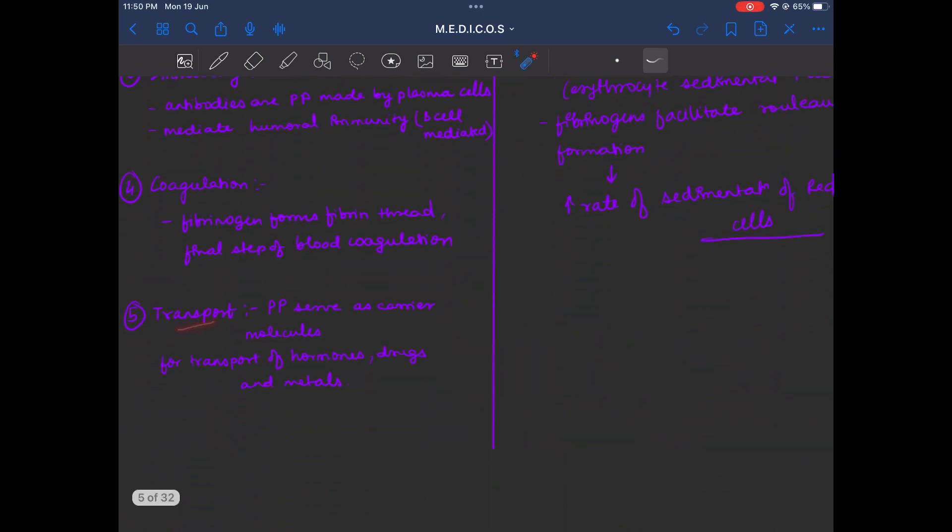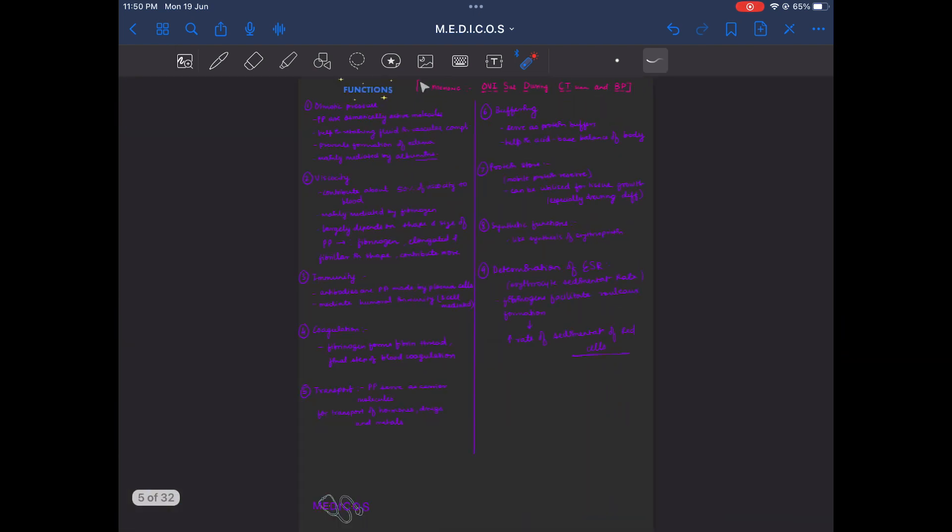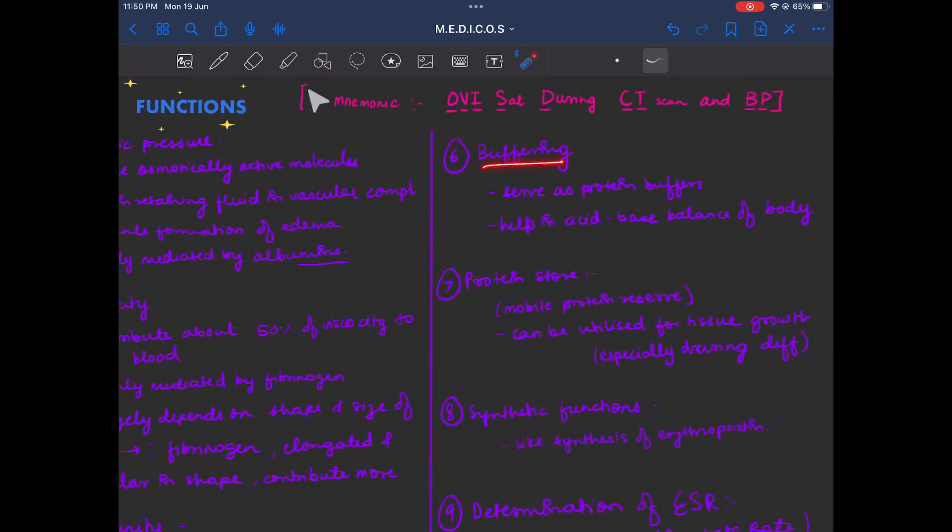Transport - globulin plasma proteins serve as carrier molecules for transport of hormones, drugs and metals like transferrin and ceruloplasmin. Then buffering - plasma proteins serve as protein buffers.